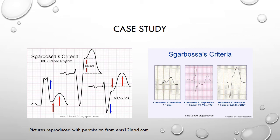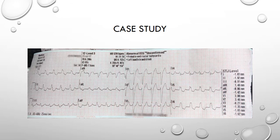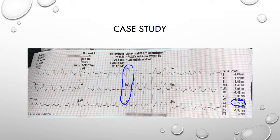If we apply Sgarbosa criteria to our earlier ECG, firstly we don't see any concordant ST elevation in any leads. Secondly, we don't have at least one millimetre of concordant ST depression in leads V1 to V3, although V3 is showing some depression of 0.27 millimetres — rather than the elevation we would expect to see with a negative QRS as in V1 and V2. Thirdly, in the leads with a negative QRS (V1 to V3) we don't have discordant ST elevation of five millimetres or more. This ECG does not meet Smith's modified criteria either.